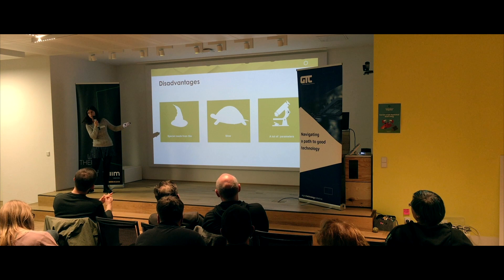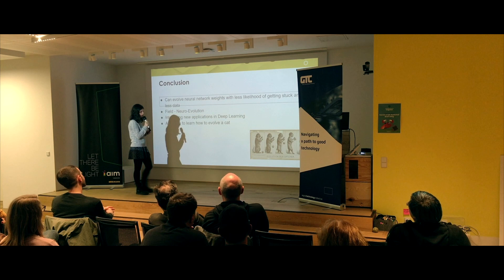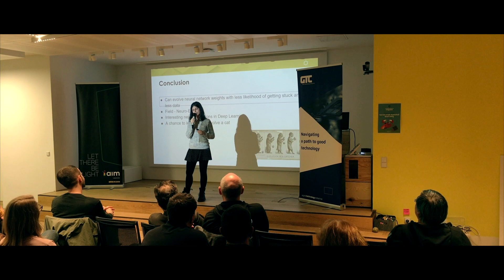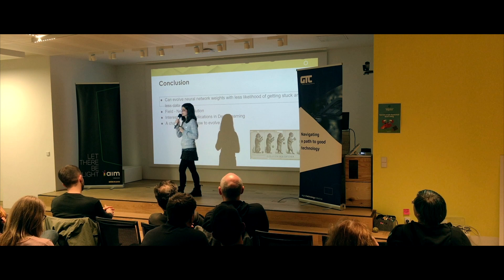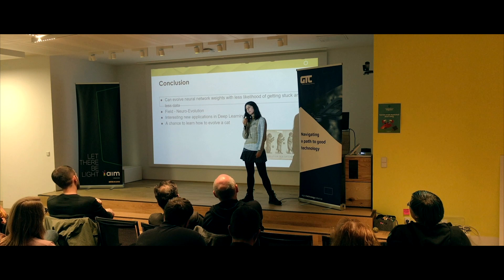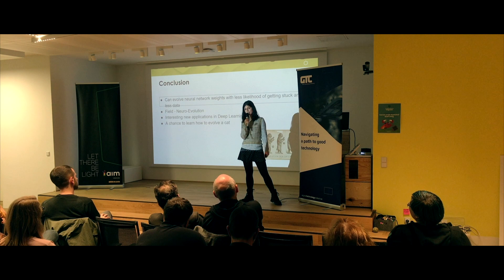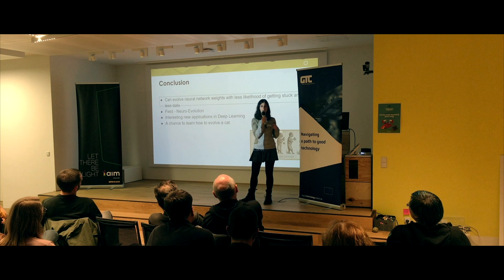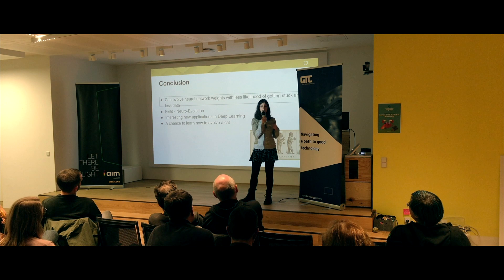In conclusion, you can train or evolve neural networks by using evolutionary algorithms, and you might be able to use less data, work less slowly, and be less likely to get stuck. This is a field called neuroevolution, and it is starting to get more popular in deep learning. If you like big buzzwords like deep learning, check it out — there is an O'Reilly podcast on neuroevolution and how it is being applied in deep learning. Oh yes, and you got a chance to see how to evolve a cat. Thank you very much.